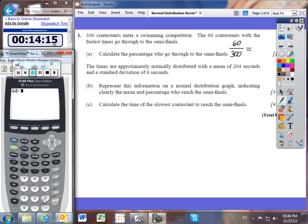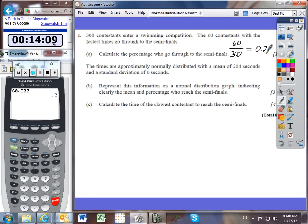Let's convert this into a percentage. So we'll do 60 divided by 300, and that's equal to 0.2. And we know that 0.2 expressed as a percentage is 20%. So we're really looking for the fastest 20% of the swimmers.